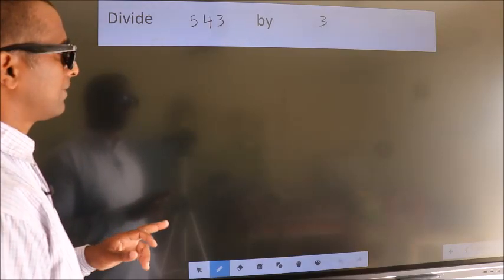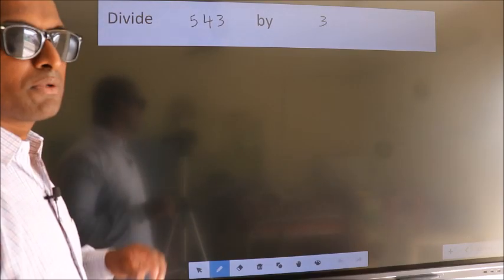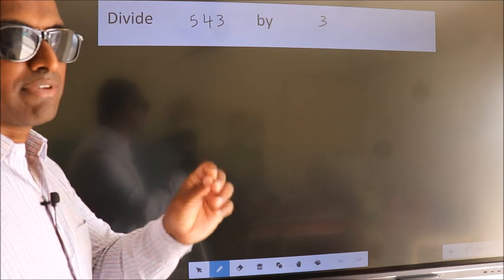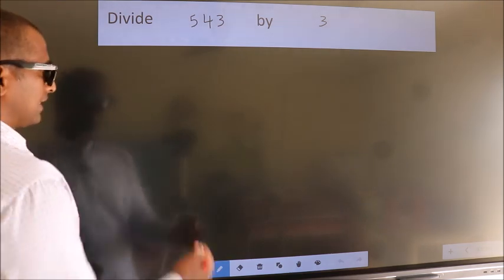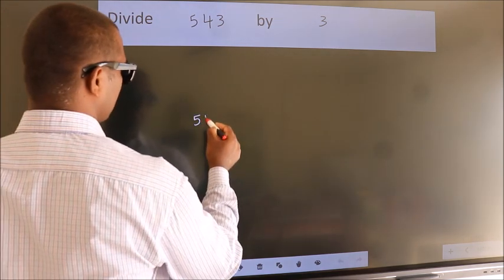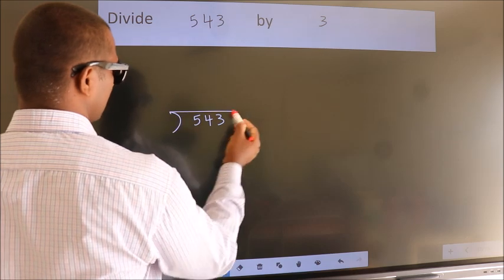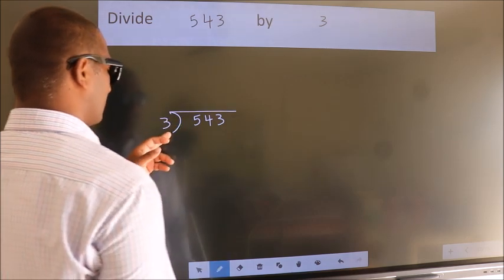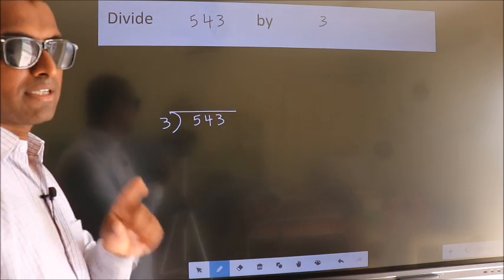Divide 543 by 3. To do this division, we should frame it in this way. 543 here, 3 here. This is your step 1.